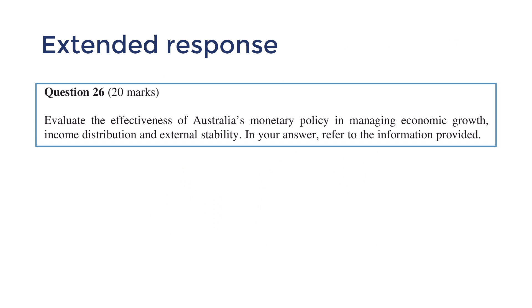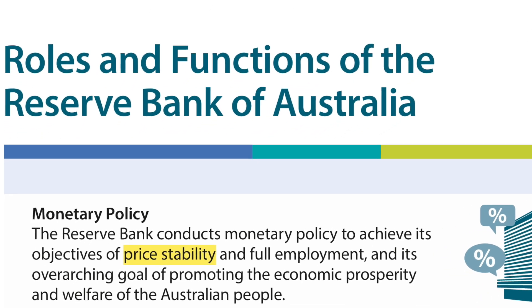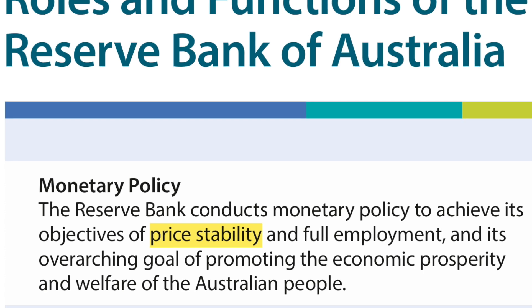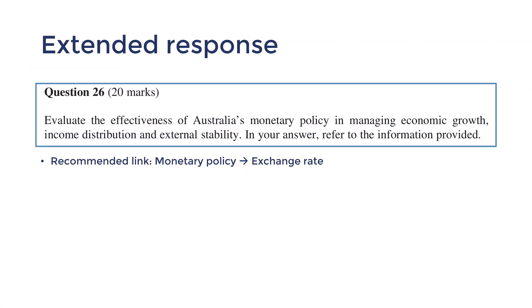A quick exam tip: if you were to write an extended response linking monetary policy to external stability — like in 2021's question 26 — I would advise that you explore the link from cash rates to exchange rates, because some markers consider this an essential link to recognize. When you look at the RBA's objectives, one of them is price stability, formerly currency stability, and some textbooks and markers interpret this to say that monetary policy has a focus on managing the exchange market. Even though this may be outdated and stats don't always support it, be safe. Make at least a theoretical link from cash rates to the exchange rate, and provide stats to support this correlation where possible, like I did with the TWI.